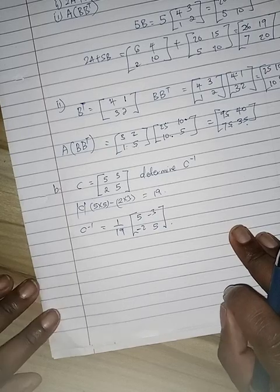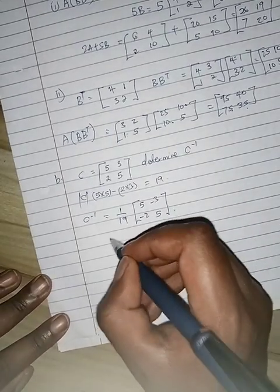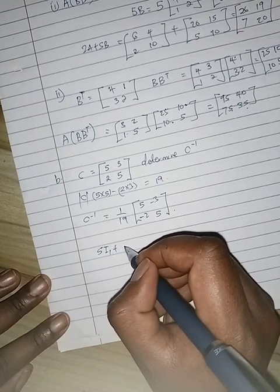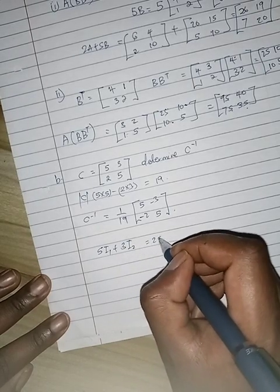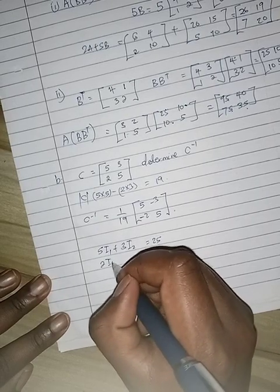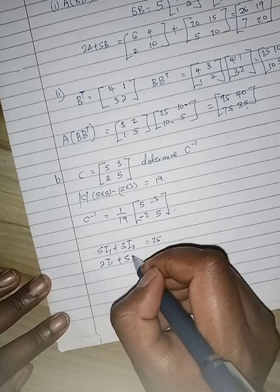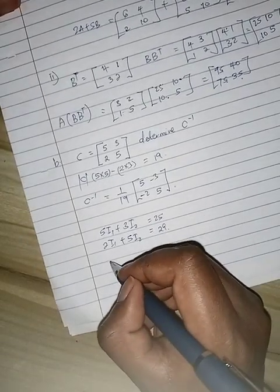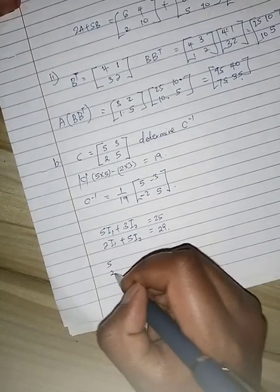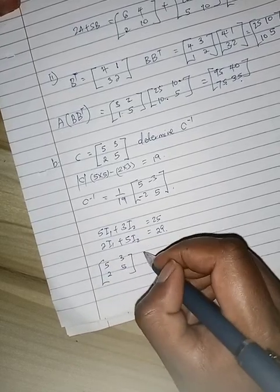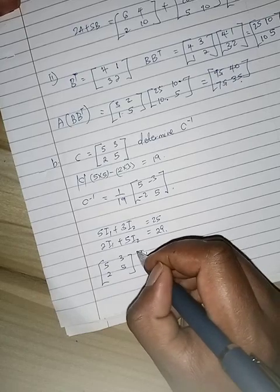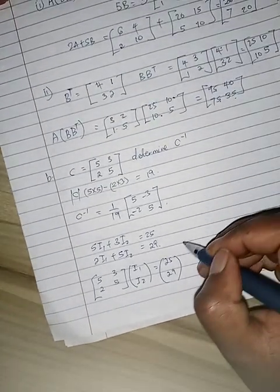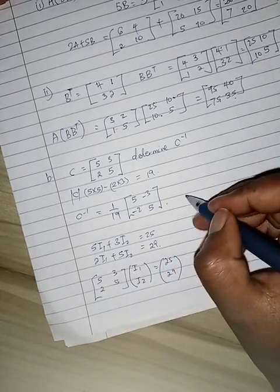Alright, so you are being asked to solve now this equation. So 5i1 plus 3i2 should be the same as 25, and 2i1 plus 5i2 is the same as 29. So if you rearrange this, you'll get 5, 2, 3, 5, then you'll have your i1 there, i2. It should be the same as 25, 29. So to solve this, you need the inverse of this.